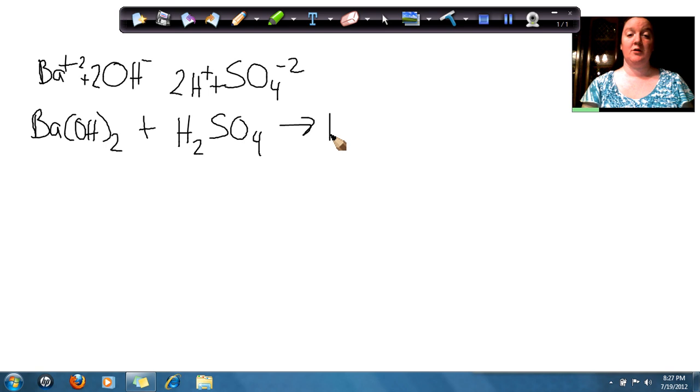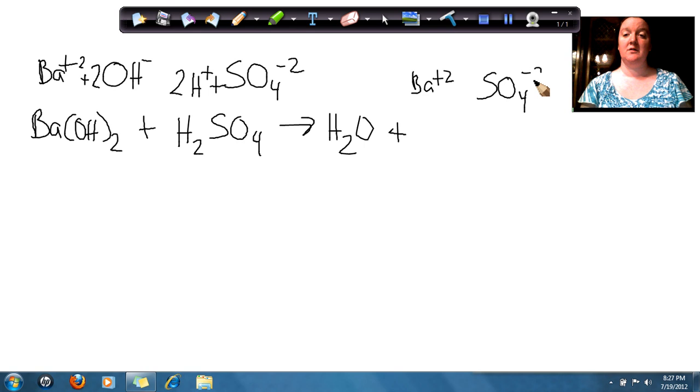And they say it makes water, which we know is H2O, plus barium sulfate. So we know barium has a plus 2 charge. We know that sulfate has a minus 2 charge. So when we put those together, we're going to get BaSO4.